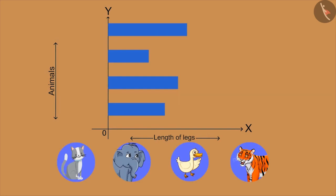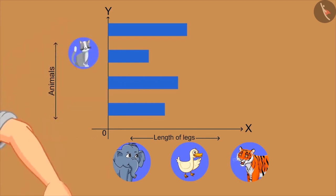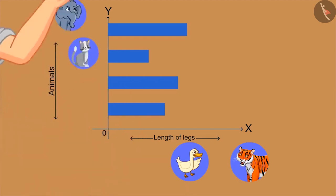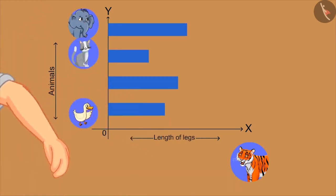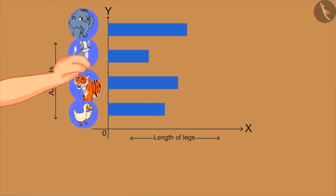Yes, absolutely right. My hand is the smallest of all. Let's make some more strip charts. Sure! Look at these strips — can you guess and identify the animal having this length of legs? You can put animal stickers on the right strip. This one is of elephant. Very good. And this one is of duck. Great. This is of tiger. So have you all understood strip chart properly?